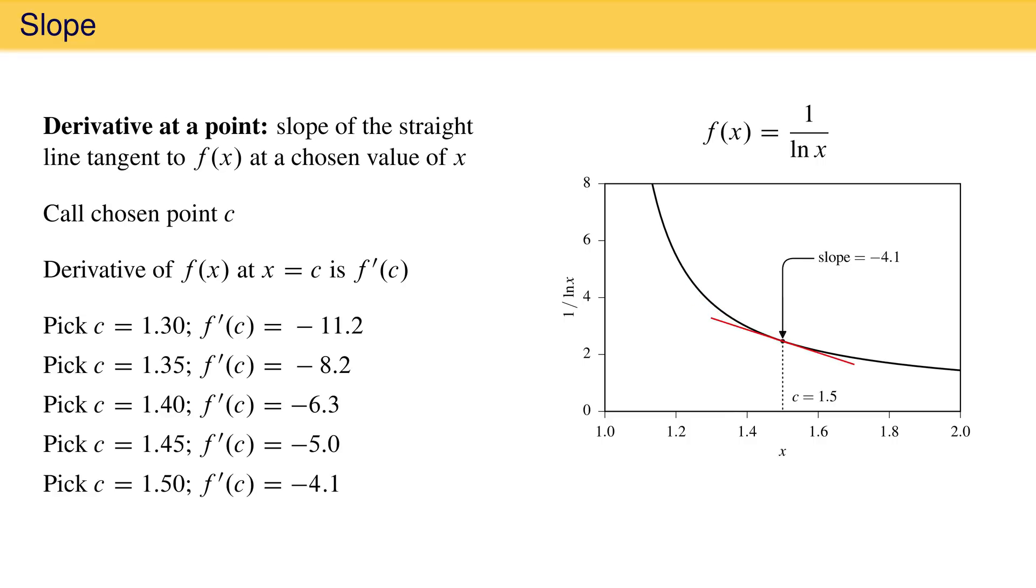Because a straight line tangent exists at every point in the interval from x equal 1 to 2, we say this function is differentiable in this interval. If a straight line tangent does not exist at a point in an interval, we say the function is not differentiable on that interval.